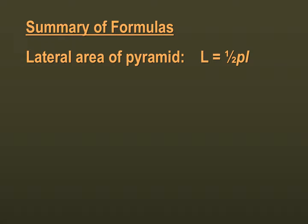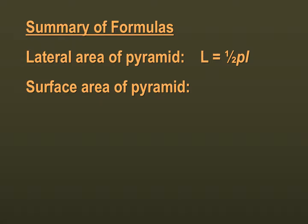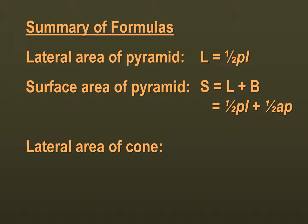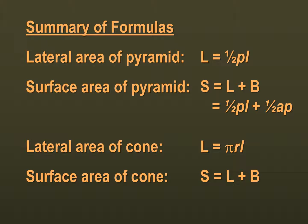Let's recap all of our formulas. For a pyramid: lateral surface area is one half perimeter times slant height, and total surface area is lateral surface area plus the base — so one half perimeter times slant height, plus one half apothem times perimeter. For a cone: lateral surface area is π times radius times slant height, and total surface area is that lateral surface area plus the base, giving us π times radius times slant height plus π times radius squared.